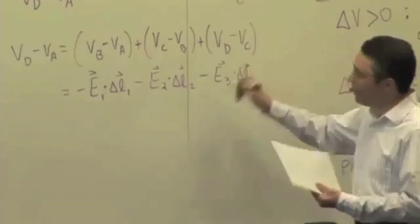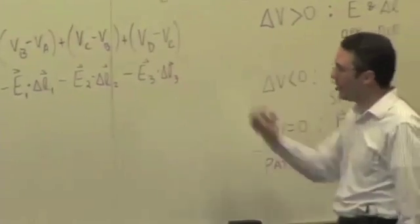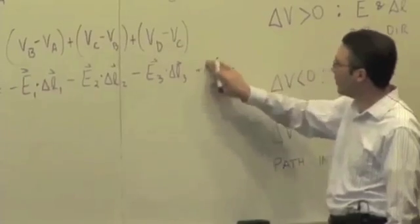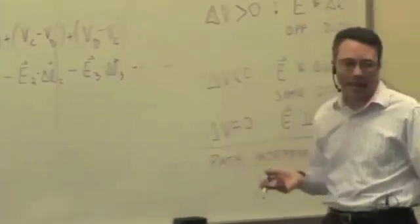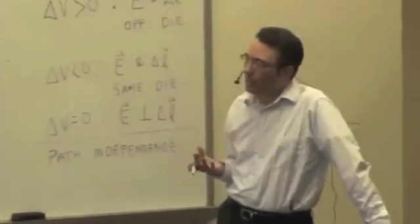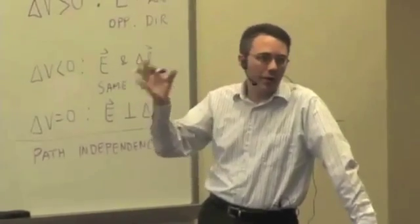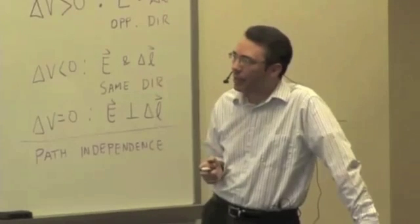And if we add other regions continuing, we just keep on doing the same thing. Adding up the potential difference across each part of the path where we know the field is uniform within that region.